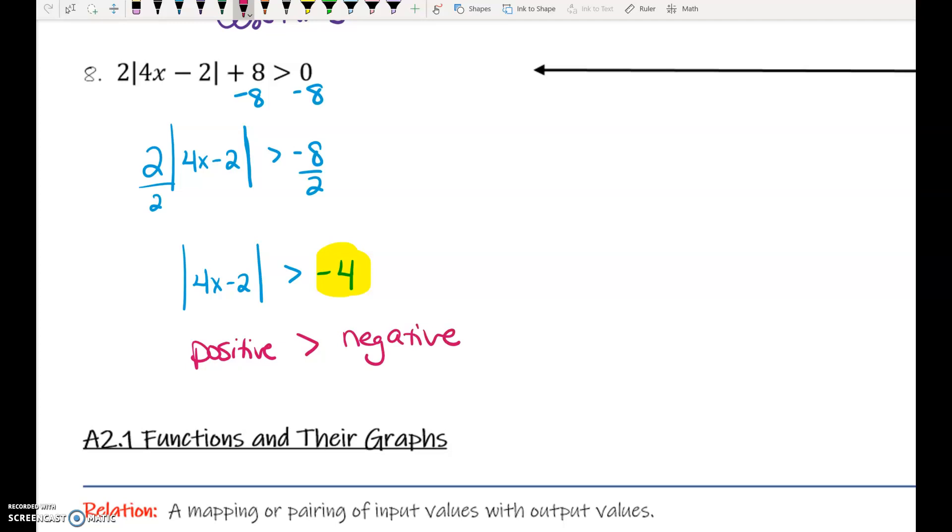Positive numbers are always bigger than negative numbers. This means many solutions, or all real numbers, or infinite solutions, however you want to write that. It basically means that no matter what you pick to plug into x, it is going to make a true statement because positive numbers are always bigger than negative numbers.